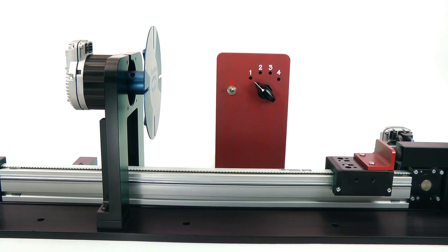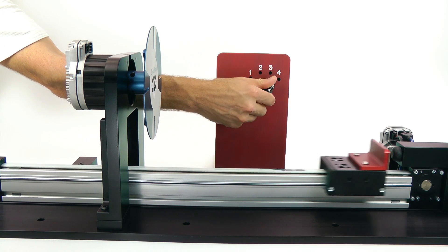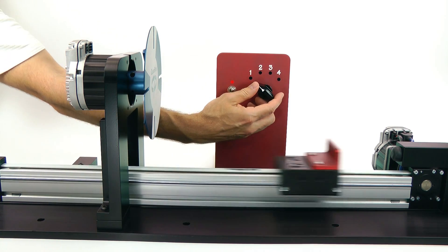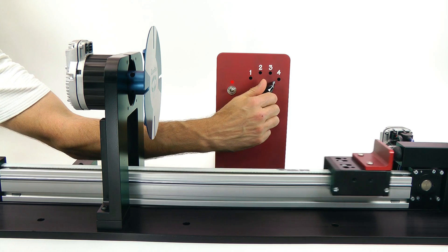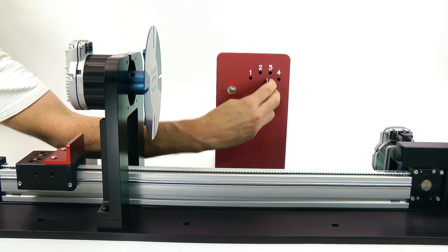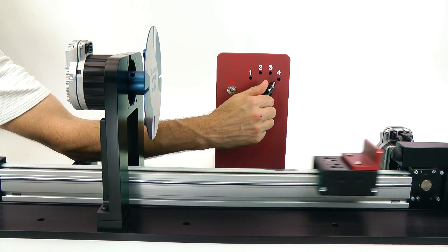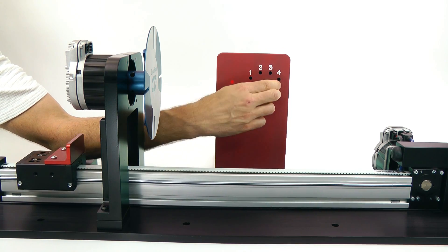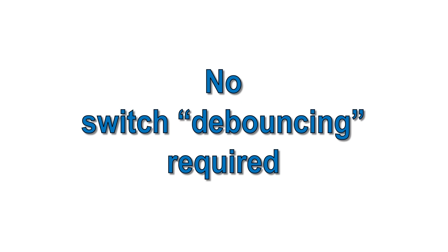You may have noticed that I can switch through intermediate states like going from position 1 to position 4 without any glitches. This is because ClearPath has an adjustable input filter that allows time for the inputs to stabilize before any motion begins. This also means you don't have to worry about mechanical switch bounce.